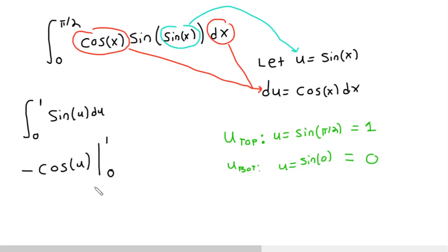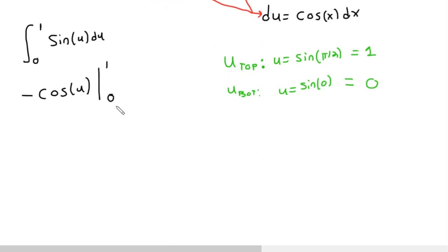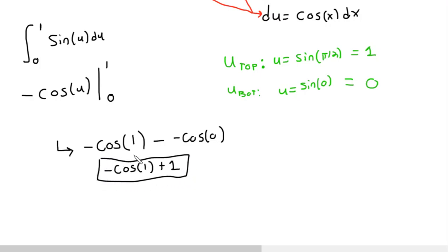Remember, for definite integrals, if you already changed the limits of integration, you don't need to go back to x at the end. So now I get: negative cosine(1) minus negative cosine(0). Cosine(0) is just 1, so minus a negative 1 is just plus 1. So I get negative cosine(1) plus 1, and that is my answer.